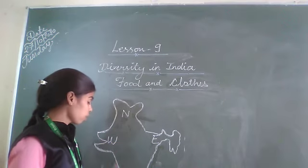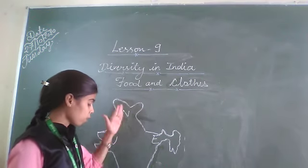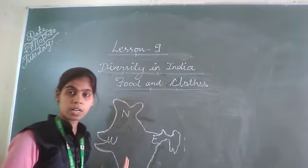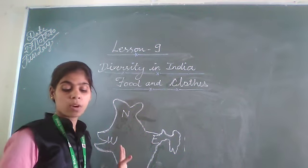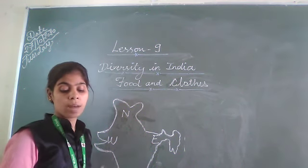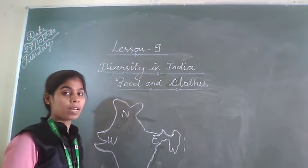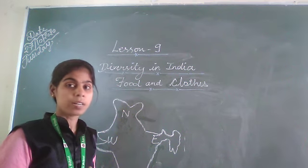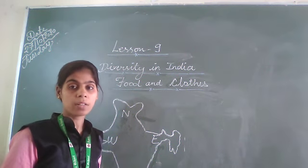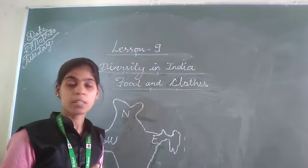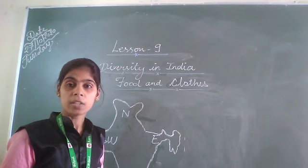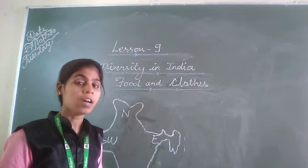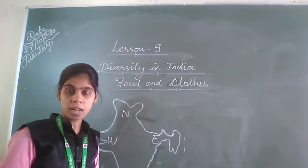Next, we will see the southern states' food. When you see the south, it is just opposite the north. Here we have Appam, which is related to Kerala. Dosa is related to Tamil Nadu. Next is Hyderabad Biryani. Hyderabad is the capital of Telangana, so Hyderabad Biryani is related to Andhra Pradesh and Telangana.